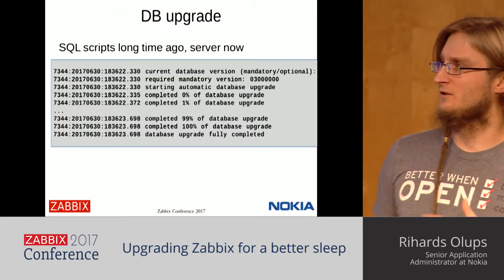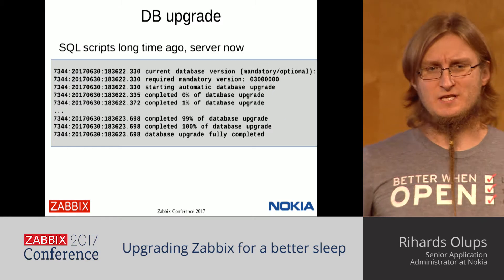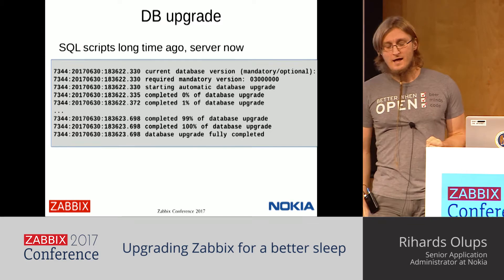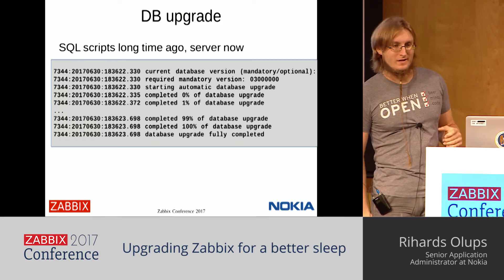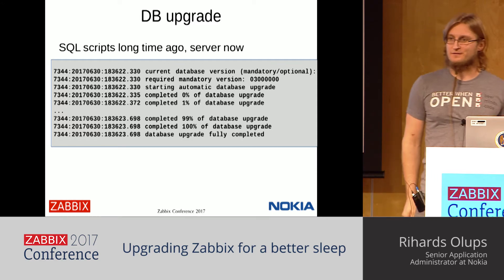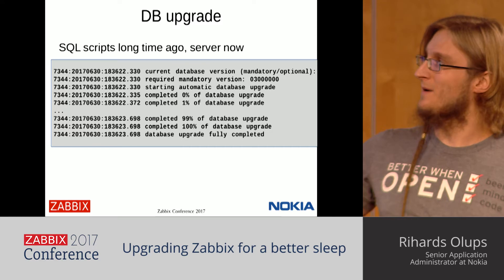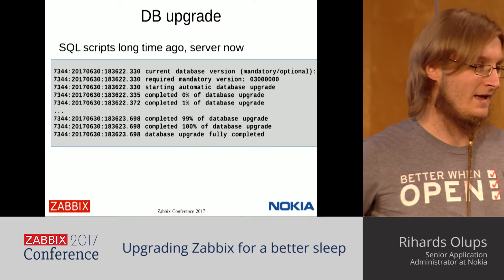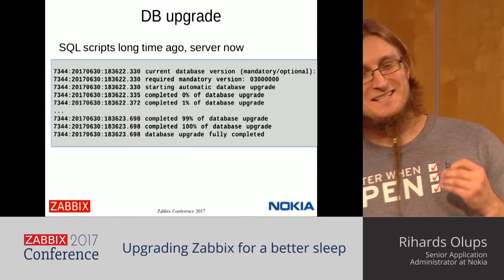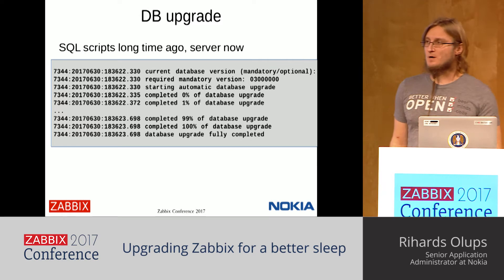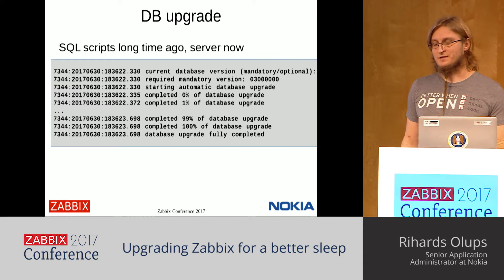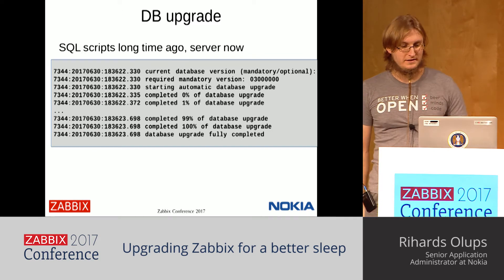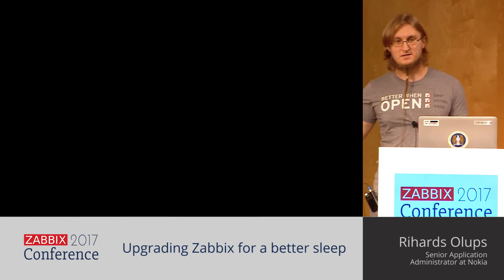How does the Zabbix upgrade happen? A long time ago there was just a script with SQL statements — simple but not very flexible. Now the Zabbix server performs the upgrade itself when the new version is first started. If everything is successful, you'll see confirmation in your server log file. Just in case something goes wrong, it's a good idea to get some familiarity with how the upgrade process happens through the Zabbix server code.